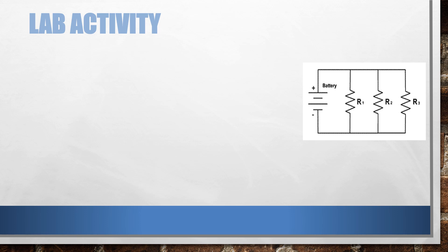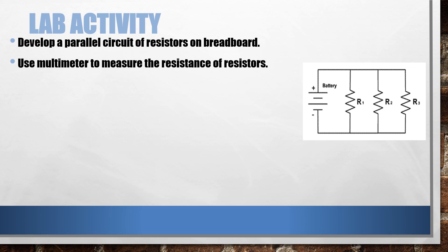Now what is your lab activity? Develop a parallel circuit of resistors on breadboard. Then use a multimeter to measure the resistance of all the resistors. Then adjust the supply voltage to 9 volts DC and connect it to the breadboard.